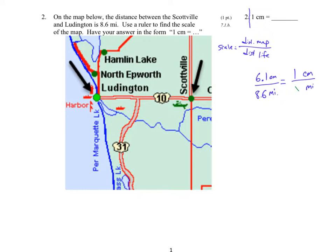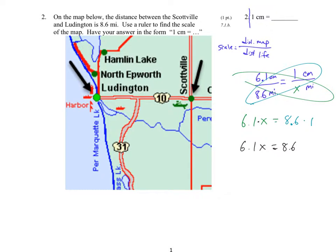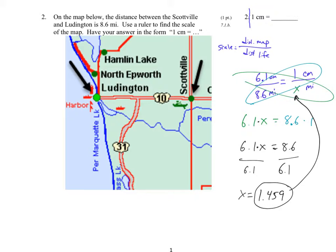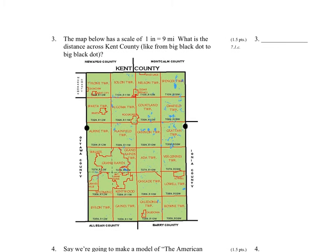Now we cross multiply and divide. We put an X in there — that's what we're trying to find. 6.1X equals 8.6. To find X, divide both sides by 6.1, giving X equals 1.459. If the units are different on the two sides of the equals — here I have centimeters, here I have miles — you have to include them. On most of this practice quiz you're going to have to put units in on everything.